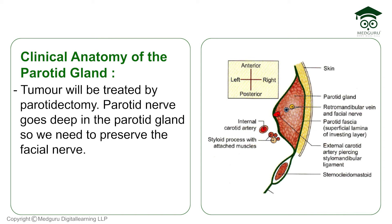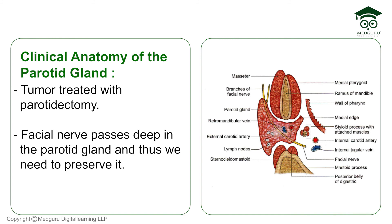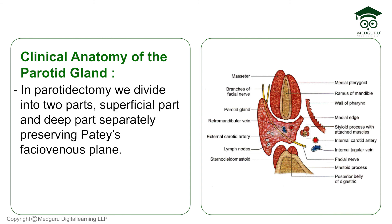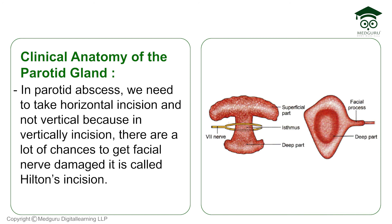For treatment of a parotid tumor, parotidectomy is performed. Since the facial nerve runs deep within the gland, we must preserve it. This is done by dividing the gland into superficial and deep parts, preserving the Patty's fasciovenous plane. For drainage of a parotid abscess, horizontal rather than vertical incisions are made — because vertical incisions risk damaging the facial nerve — and this type of incision is called Hilton's incision.